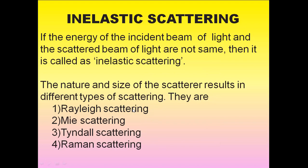Depending on the nature and size of the scatterer, there are different types of scattering. They are called Rayleigh scattering, Mie scattering, Tyndall scattering, and Raman scattering. Let us explain each one with illustrations and examples.